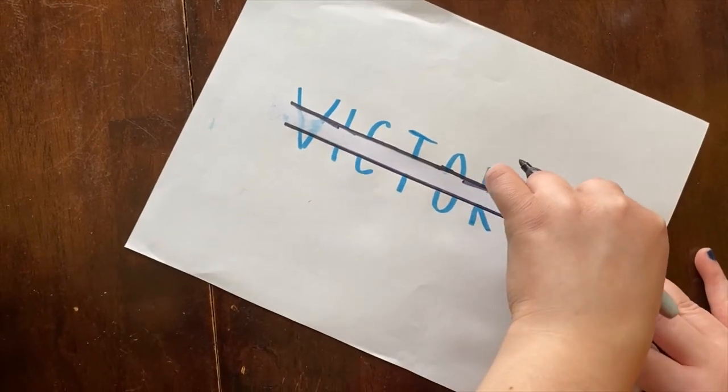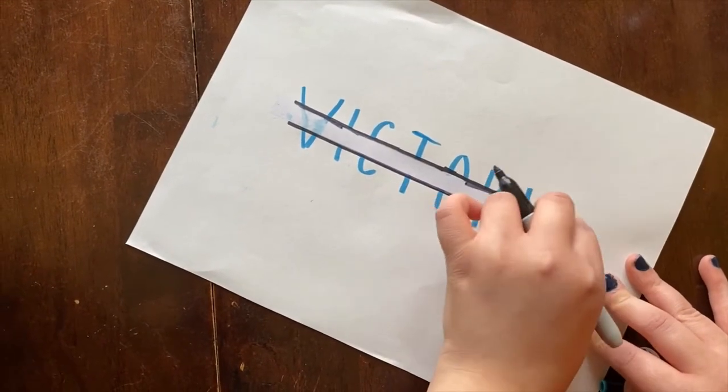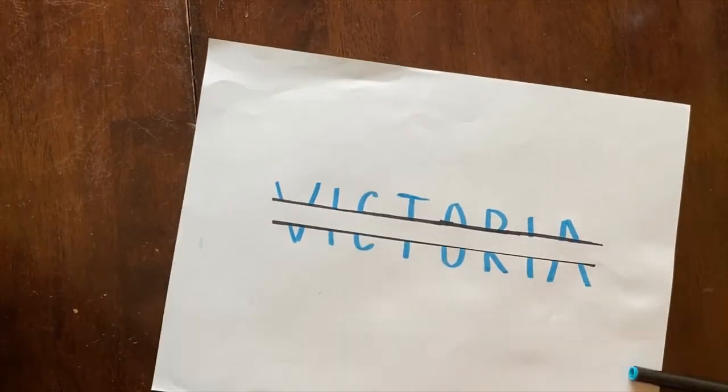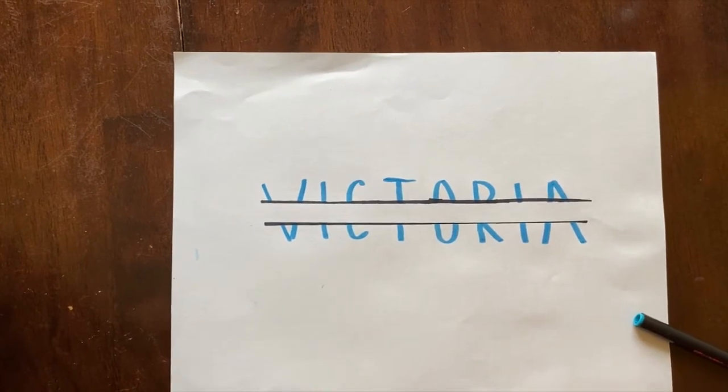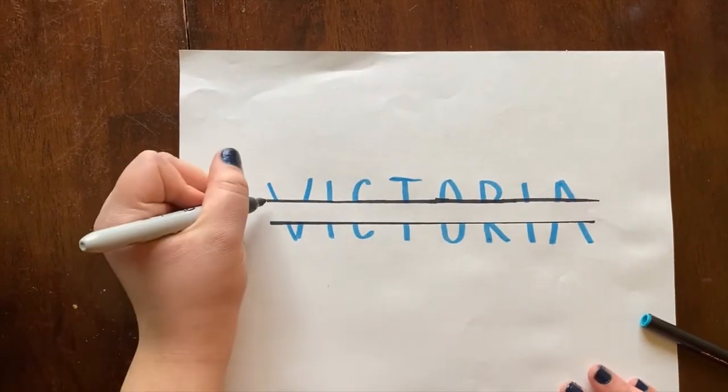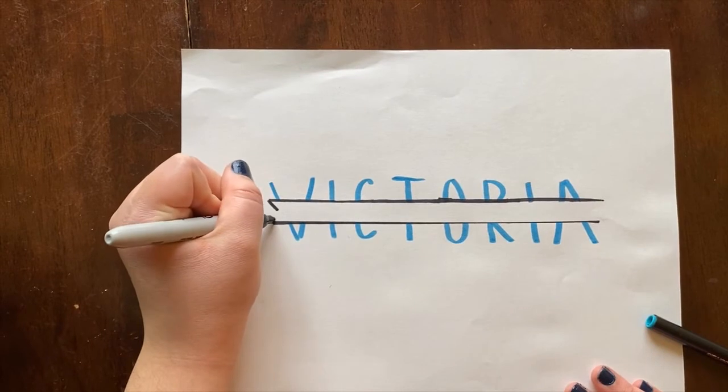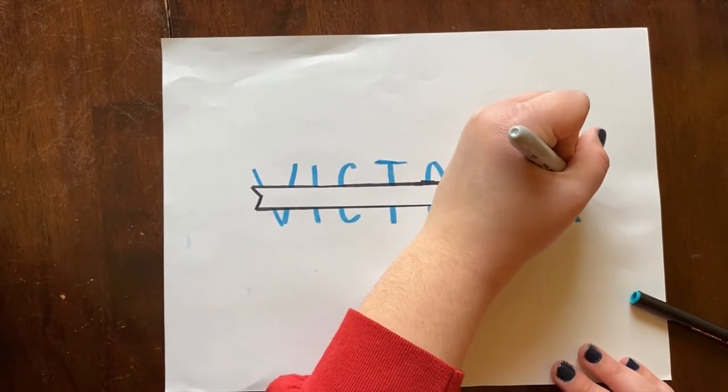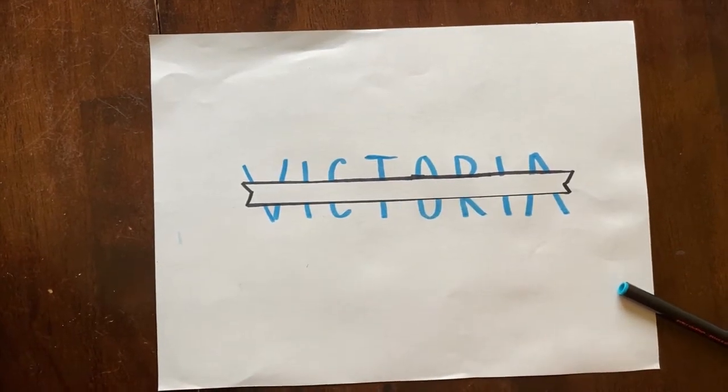So once I was done making my lines on the top and the bottom of the tape, I'm just going to remove the tape. After the tape is completely off, I'm just drawing these two little lines on both sides of my name just to connect the top and the bottom lines from the tape.